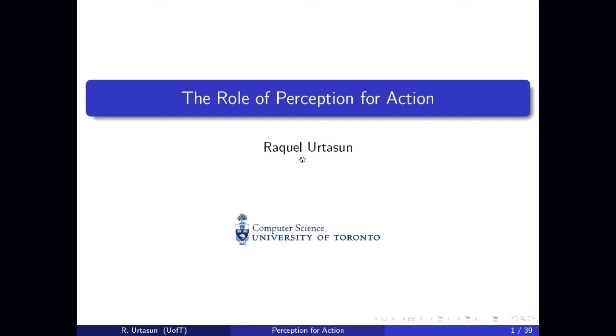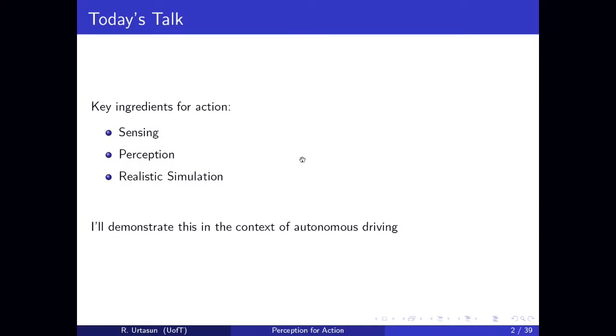So today I'm going to be talking not about action that much, but more about perception. In particular, I want to tell you that if you want to really do complicated actions, you need to understand the 3D world that you live in, as well as perceive what different objects are doing in three-dimensional space. I'll give you a couple of thoughts about the use of simulation in this context, mostly talking in the context of self-driving cars, but you can generalize this with your favorite robot.